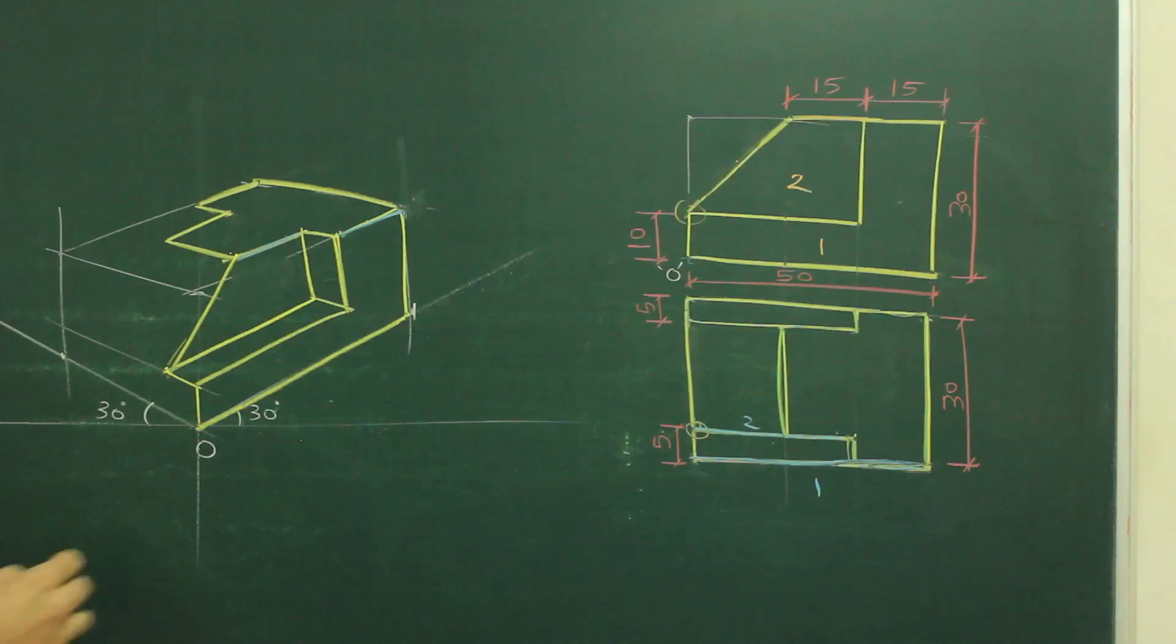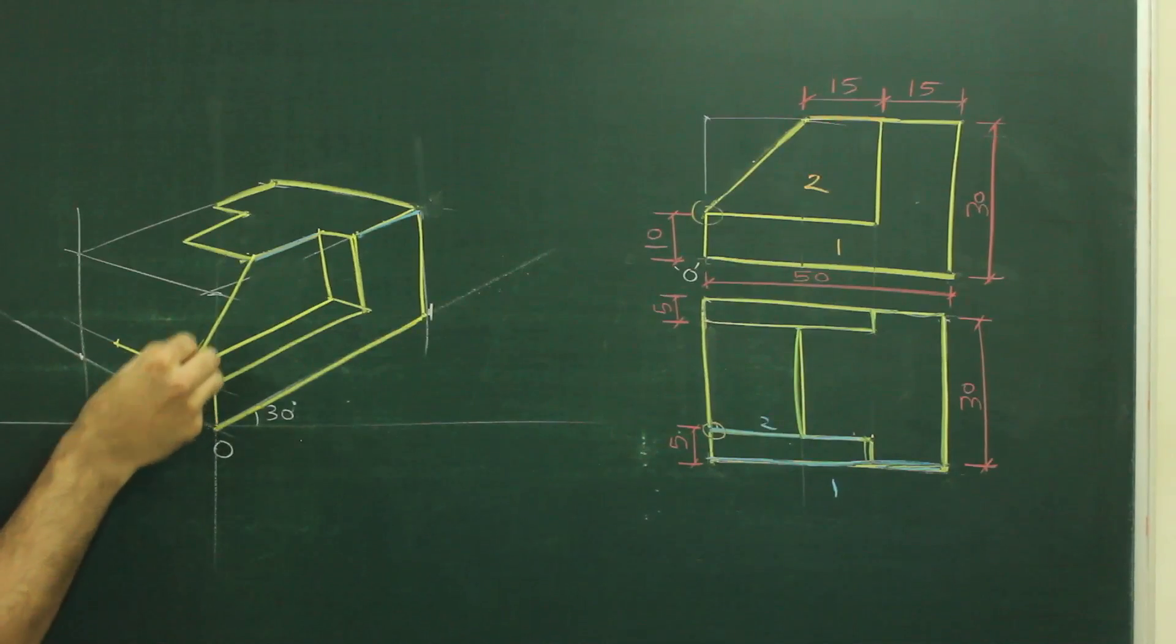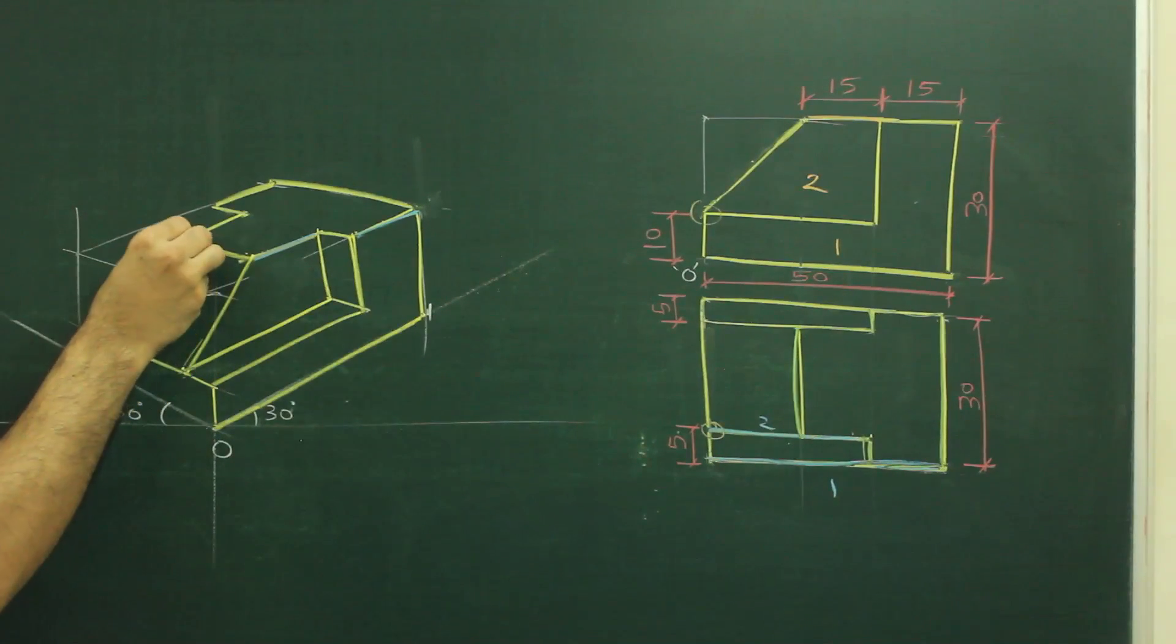Now if you see top view, how much it is behind? 20. So we will go behind by 20, 20, and then join this.